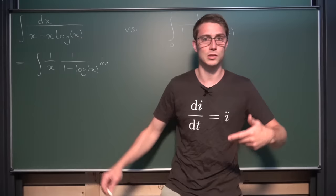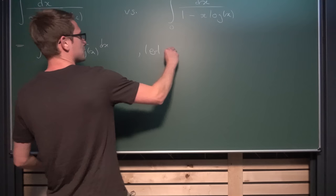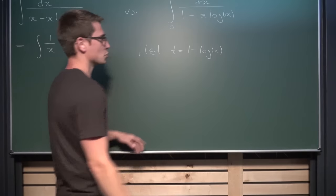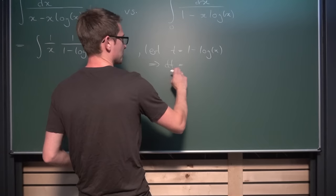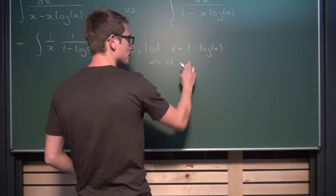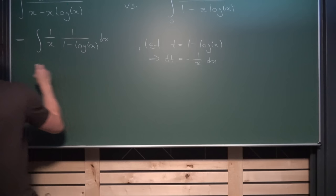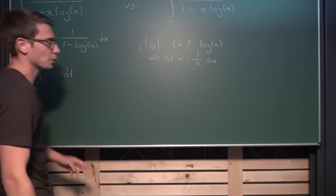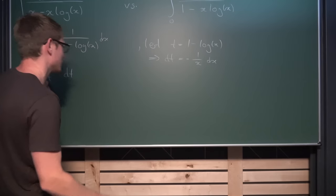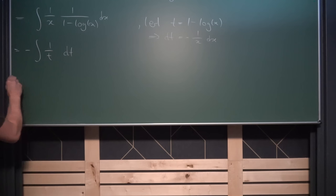So let us substitute this whole denominator right here, including the log of x, for let's say t. Let t be equal to 1 minus the natural log of x. If we differentiate both sides implicitly, we get that dt is equal to negative 1 over x dx. Now you notice that 1 over x dx is already included inside of the integrand, which is very great. So we can substitute this for our differential dt — don't forget the negative sign. So we get negative the integral of dt over t.